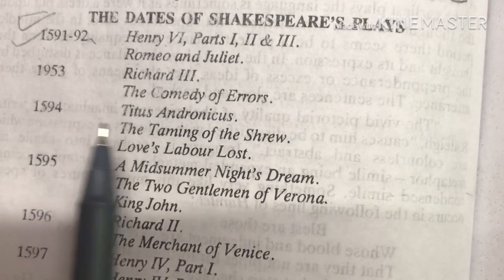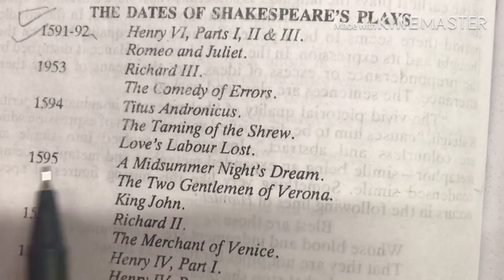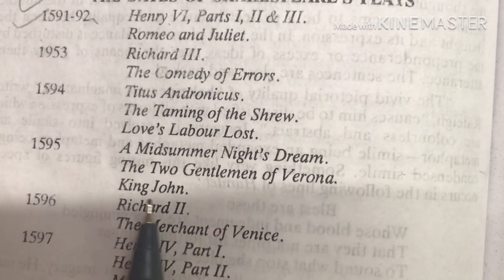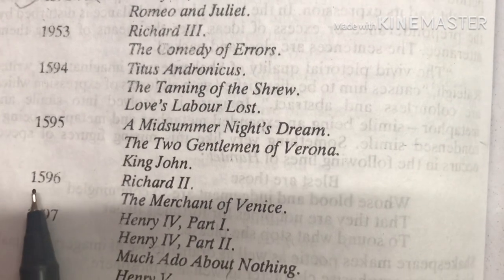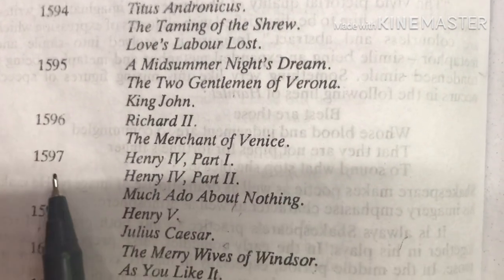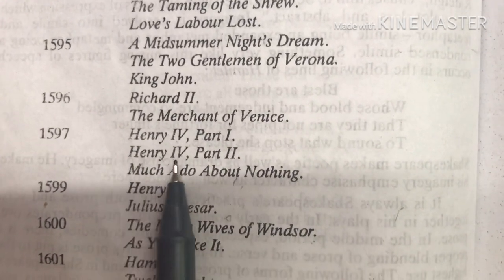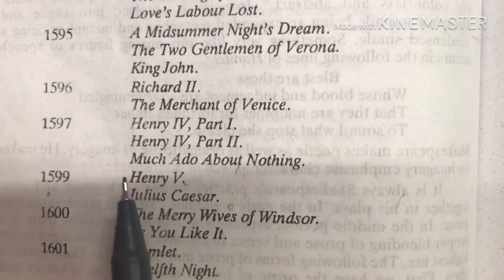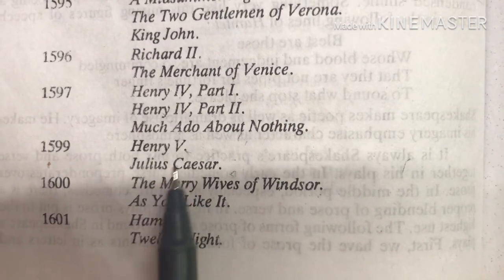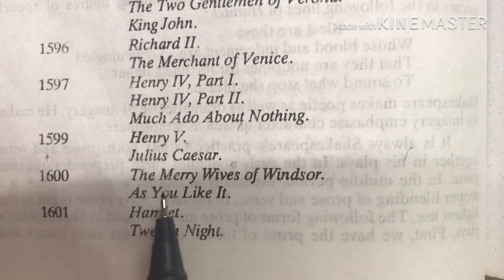In 1594 — Titus Andronicus, The Taming of the Shrew, Love's Labour's Lost. In 1595 — A Midsummer Night's Dream, The Two Gentlemen of Verona, King John. In 1596 — Richard 2 and The Merchant of Venice. In 1597 — Henry 4 Part 1. Then Henry 4 Part 2, Much Ado About Nothing. In 1599 — Henry 5 and Julius Caesar.